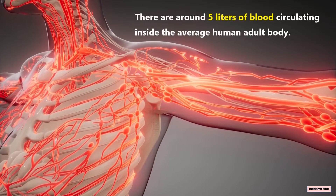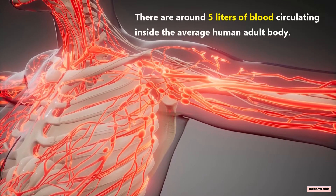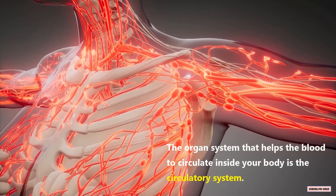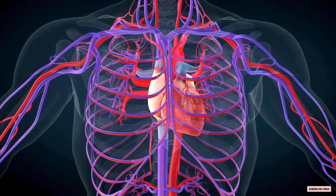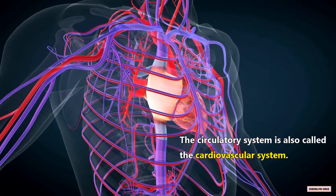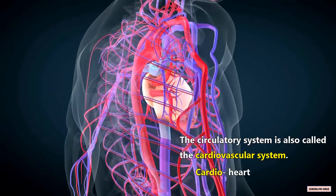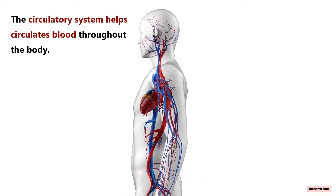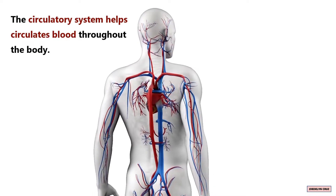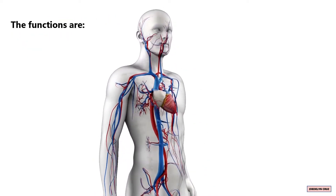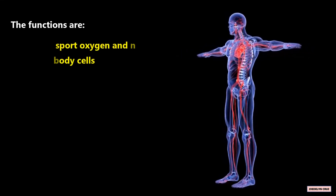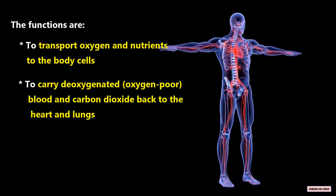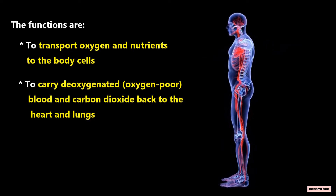There are around 5 liters of blood circulating inside the average human adult body. The organ system that helps the blood to circulate inside your body is the circulatory system, also called the cardiovascular system. Cardio means heart and vascular refers to blood vessels. The functions of the circulatory system are to transport oxygen and nutrients to the body cells, and to carry the deoxygenated or oxygen-poor blood and carbon dioxide back to the heart and lungs.